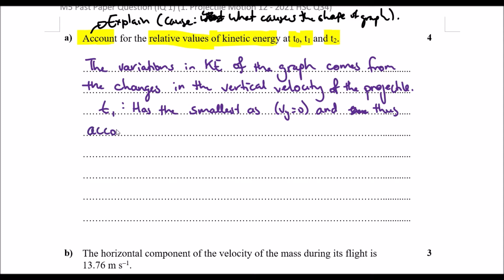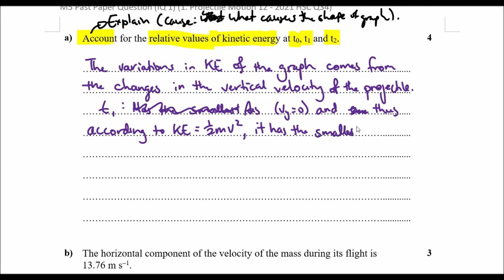According to the kinetic energy formula half mv squared, t1 has the smallest KE value.